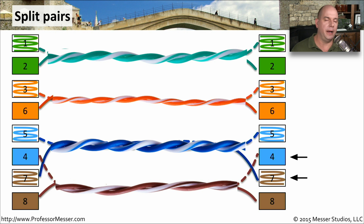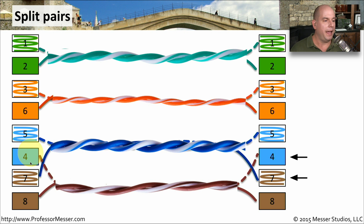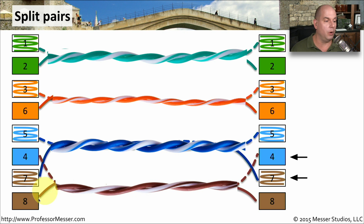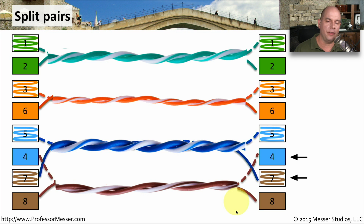This is visually what a split pair might look like. We can see that white-and-green pin 1 connects to white-and-green pin 1, solid green pin 2 connects to solid green pin 2, white-and-orange pin 3 connects to white-and-orange pin 3, and so on. The problem is at pin 4, which should be solid blue connecting to solid blue. Instead, we've split the pairs between the brown and the blue — white-and-brown is connected to pin 4, and then white-and-brown is now substituting for solid blue. Everything matches pin-to-pin, but the pairs are split. That's why we always want to keep our brown, blue, orange, and green pairs together, because splitting them will cause throughput problems.